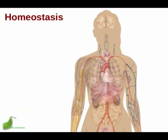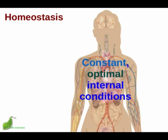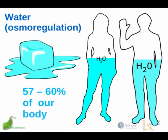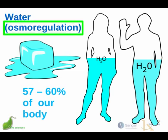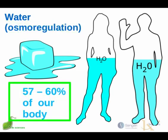Remember that homeostasis is about maintaining constant and optimal internal conditions. The regulation of water in our bodies, also called osmoregulation, is vitally important since water makes up around 60% of our bodies by mass. It varies with age, being much higher in babies and much lower as we get older.